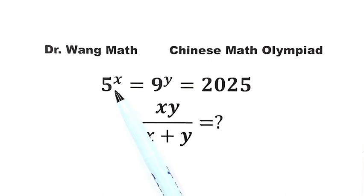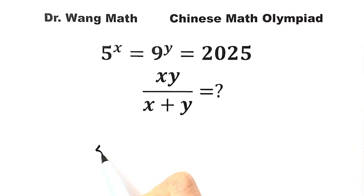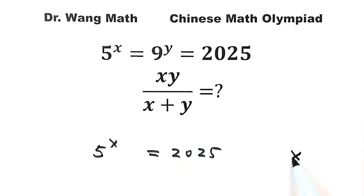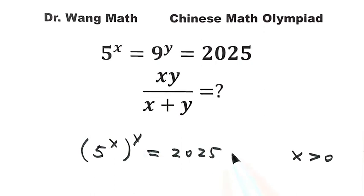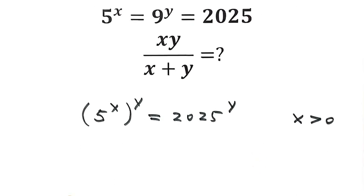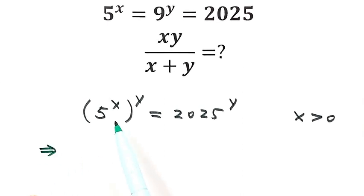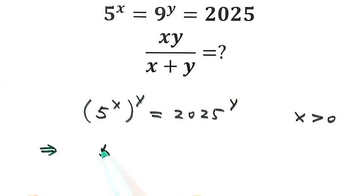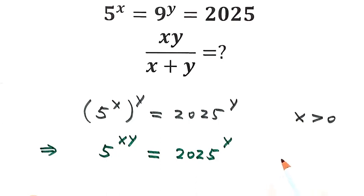We can start from 5 to the power x equals 2025. Because 5 to the power of x equals 2025, that means x is bigger than 0. Because we need xy here, so the first step is to raise both sides to the power of y. Then simplify the left-hand side — the two exponents multiply together — so we have 5 to the power of xy. It equals 2025 to the power of y. We label this one as equation 1.